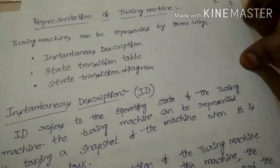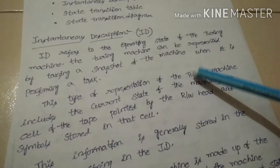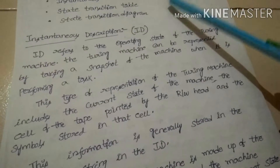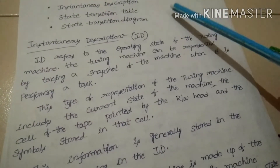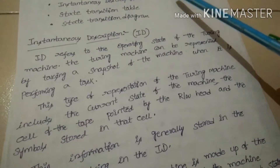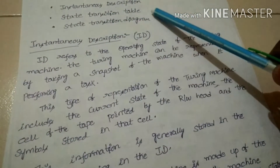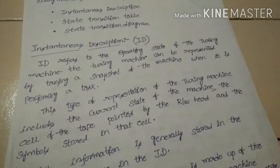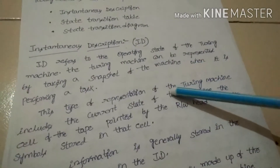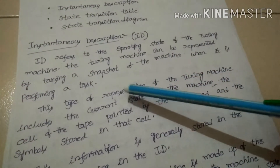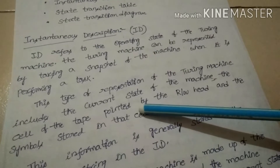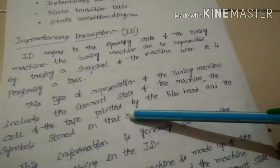The first representation is instantaneous description, or ID, which is an important topic for the Turing machine. We already explained instantaneous description in the context of pushdown automata; the Turing machine also has instantaneous description. It refers to the operating state of the Turing machine. The Turing machine can be represented by taking a snapshot of the machine while it is performing some task.